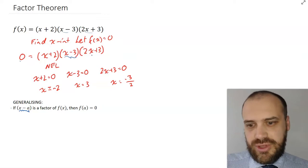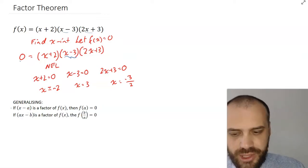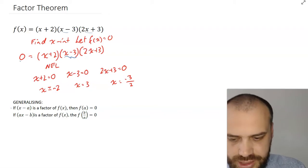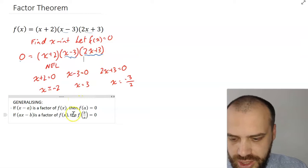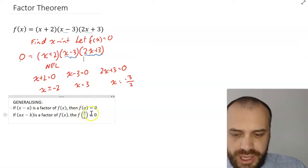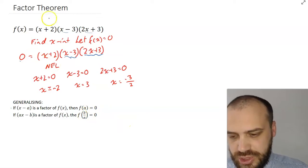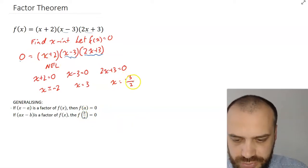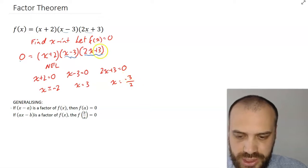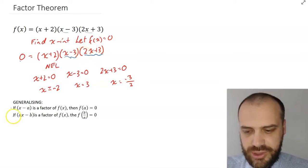Again, this one won't be anything new to you, but if (ax - b) is a factor, say something like (2x + 3) is a factor of a function, then f(b/a) is equal to 0. In other words, the solution to this function will be, or a solution, will be negative 3 over 2. The negative of whatever that value is, divided by whatever that value is. And even though you may not have spoken in those terms, you've figured it out before using the null factor law.